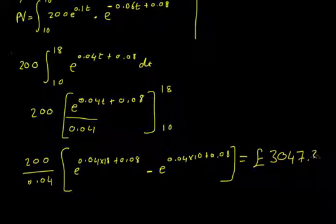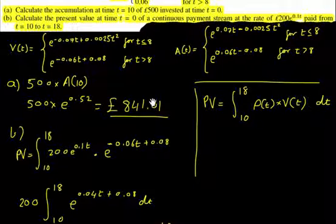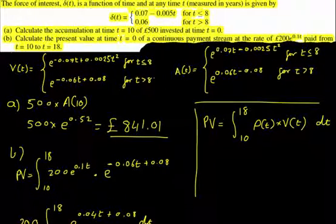£3,047.33, and those are your answers. That one there is the present value between 18 and 10 of the payments given, and this one here is the accumulation at time 10 of £500.